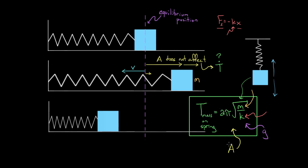To recap: the period of a mass on a spring does not depend on amplitude — changing the amplitude does not affect how long it takes to complete a cycle. The period also does not depend on gravitational acceleration, so taking this mass to Mars or the Moon with the same mass and spring would give the same period. The period is affected by the mass — bigger mass means more inertia and a larger period — and by the spring constant — bigger K means larger force, faster motion, and a smaller period.